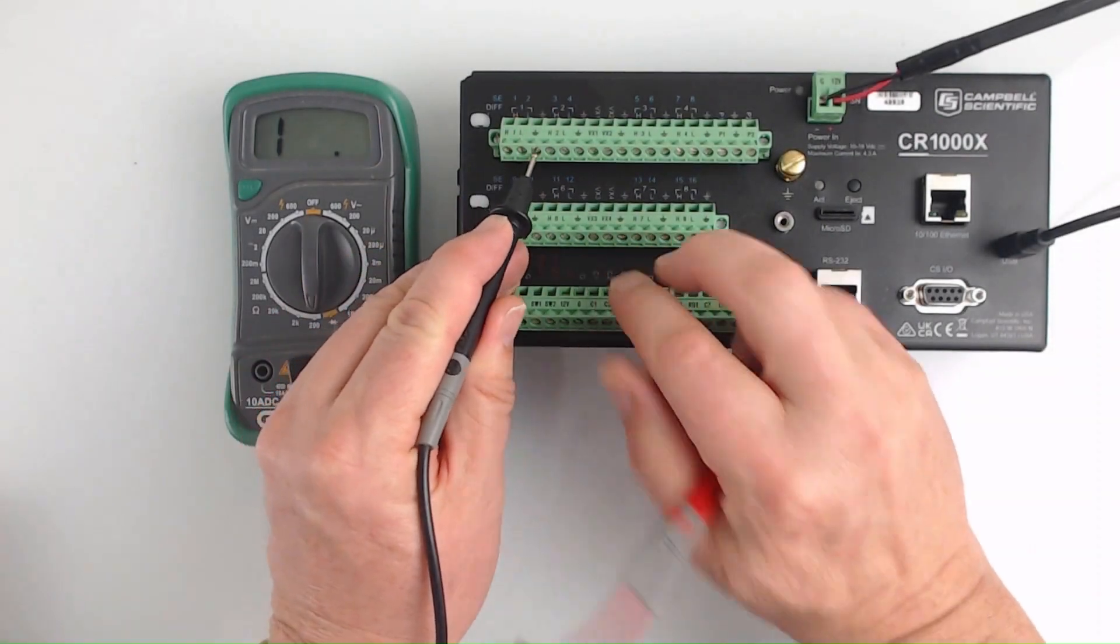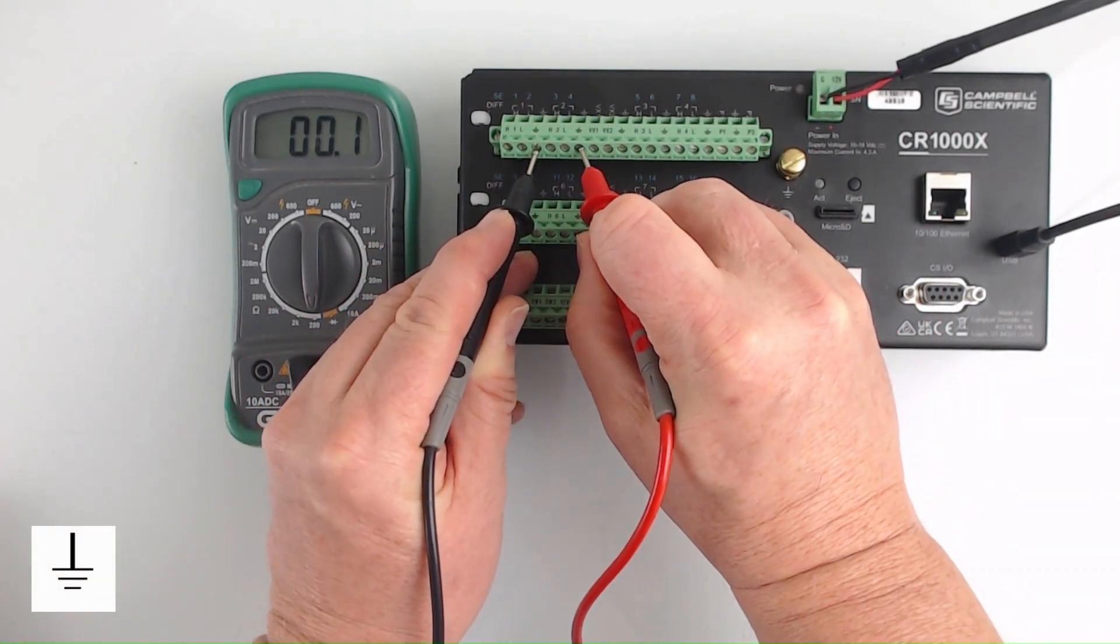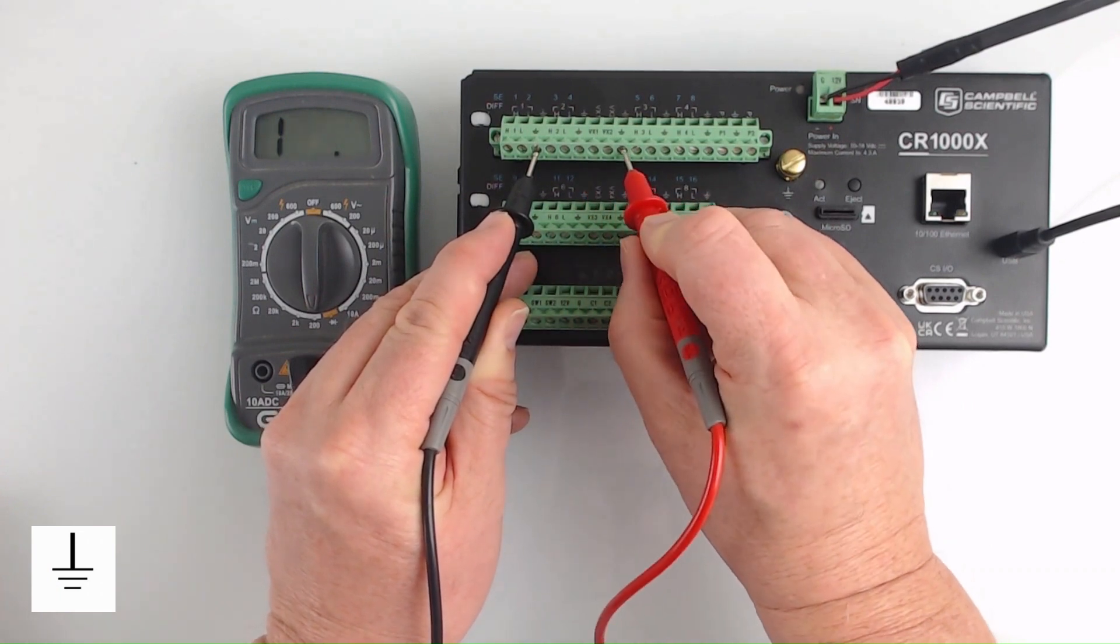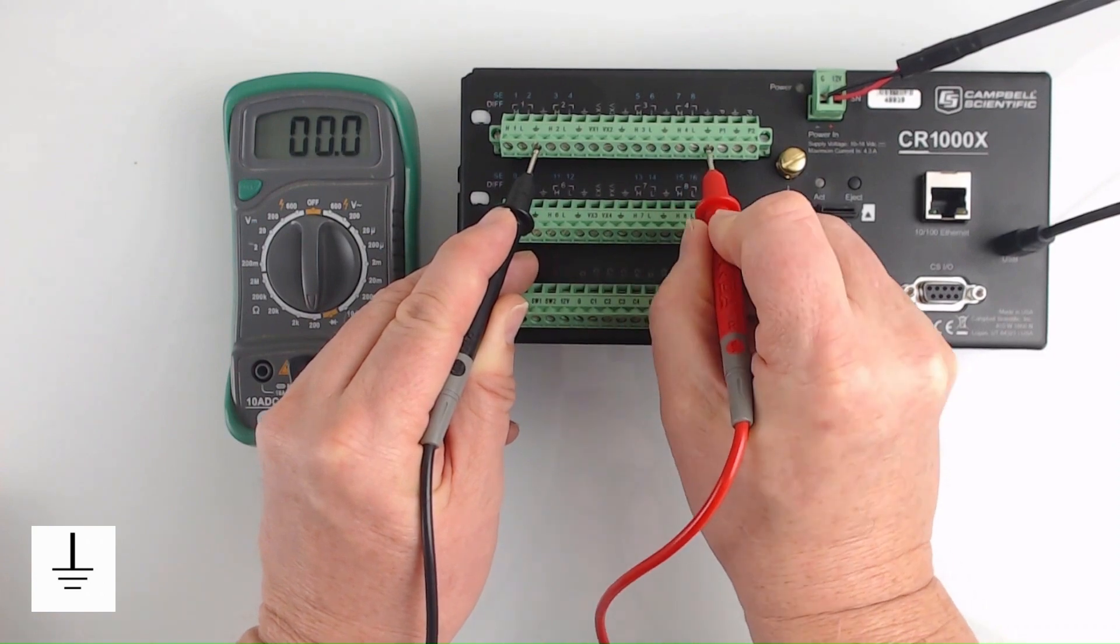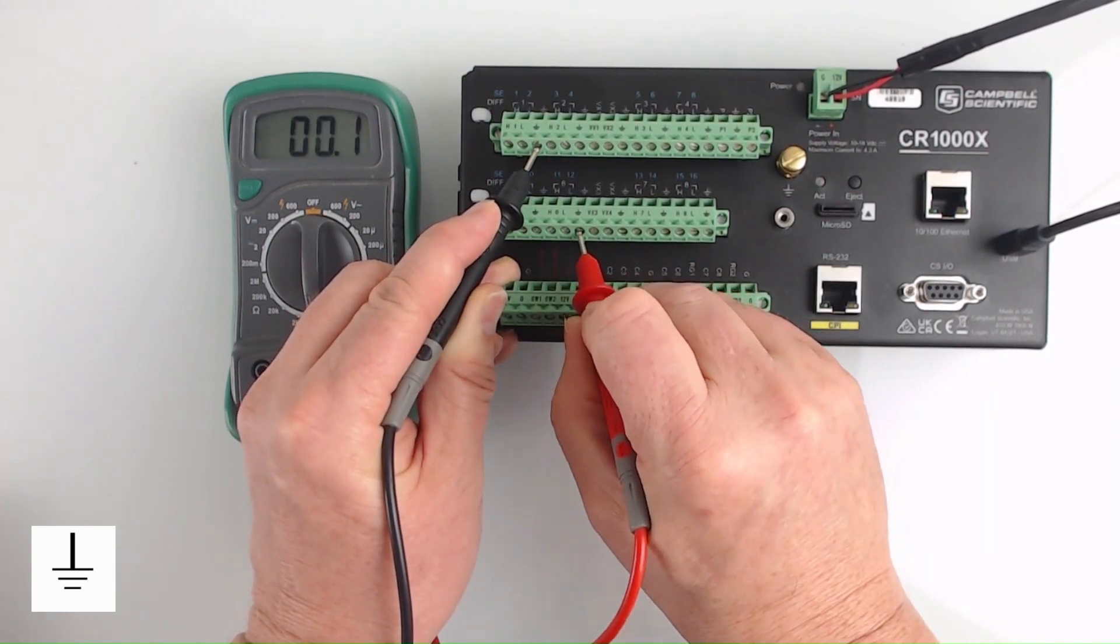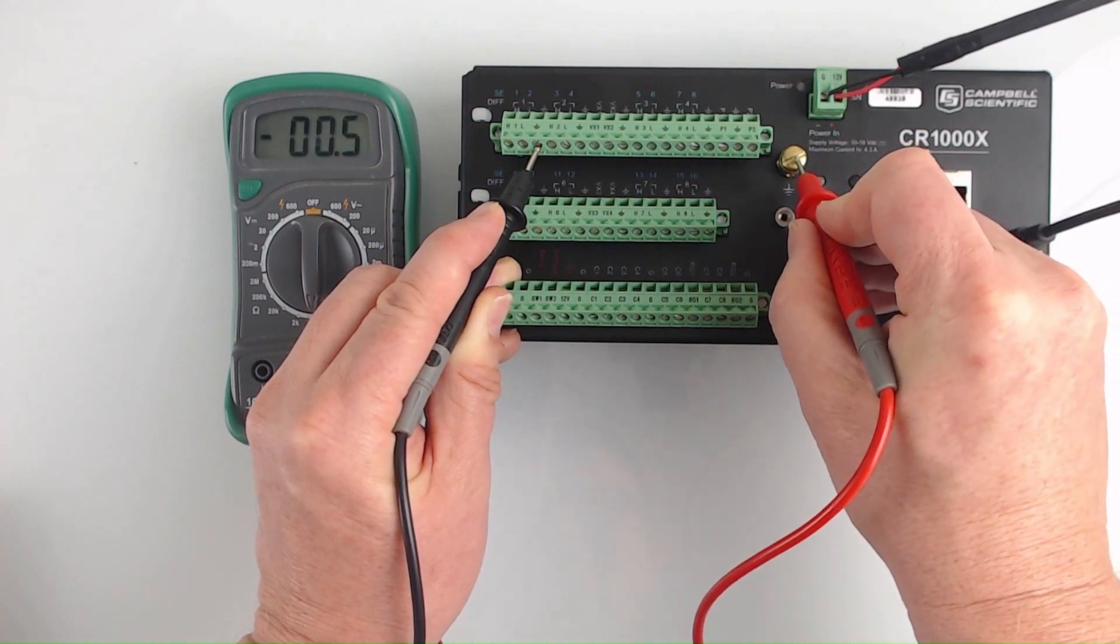Now we are ready to measure continuity. The datalogger has several channels labeled with this symbol. This is the signal ground, sometimes called signal return or analog ground. All of these channels are connected to each other inside the datalogger wiring panel. They are also connected to the ground lug.